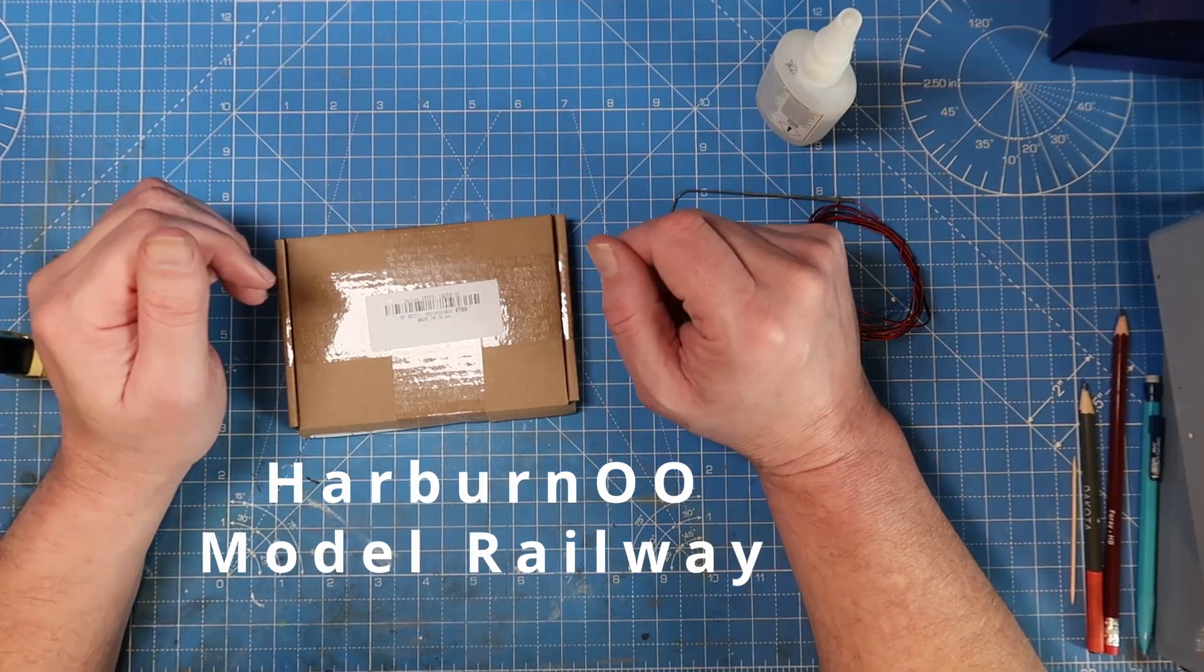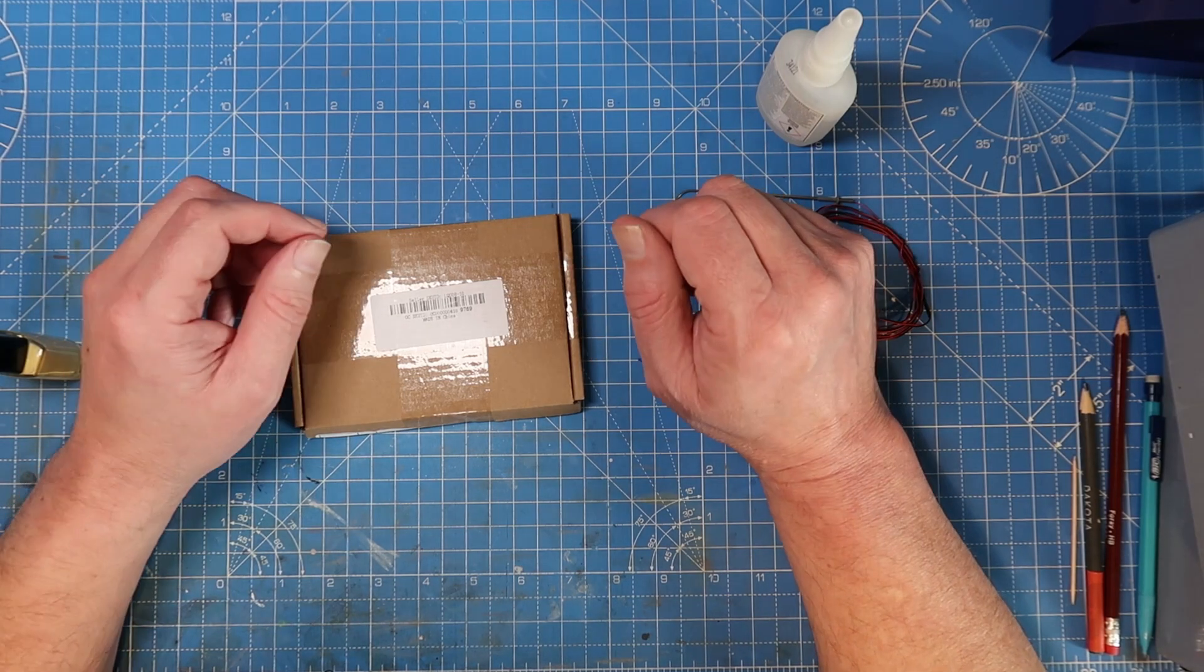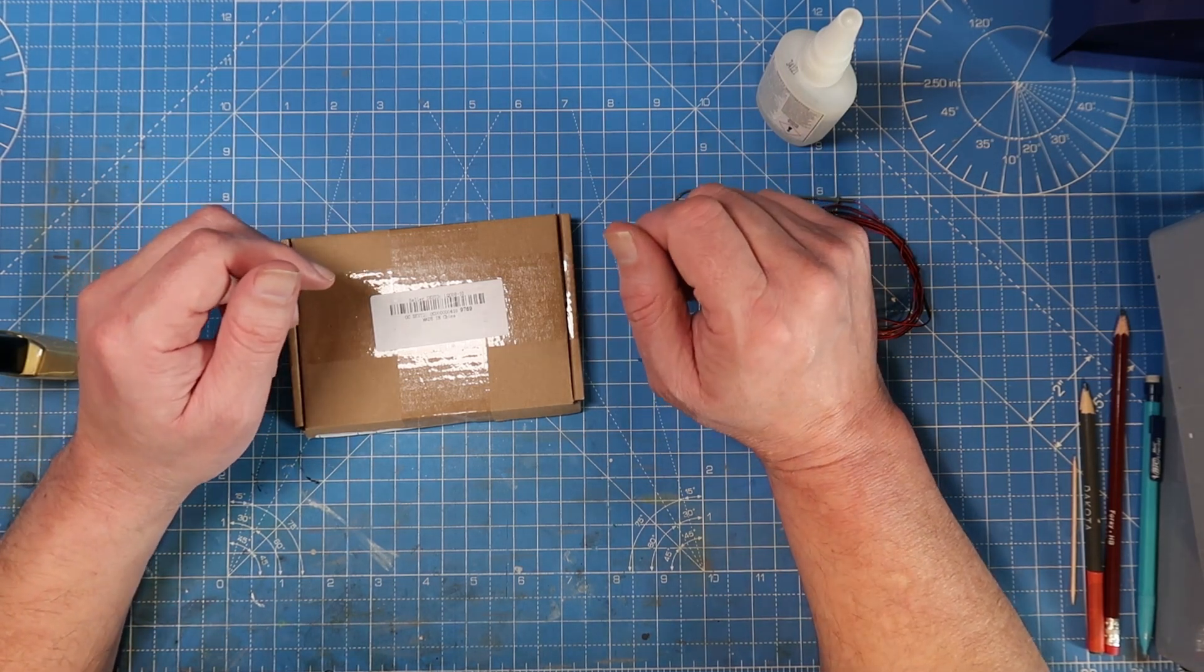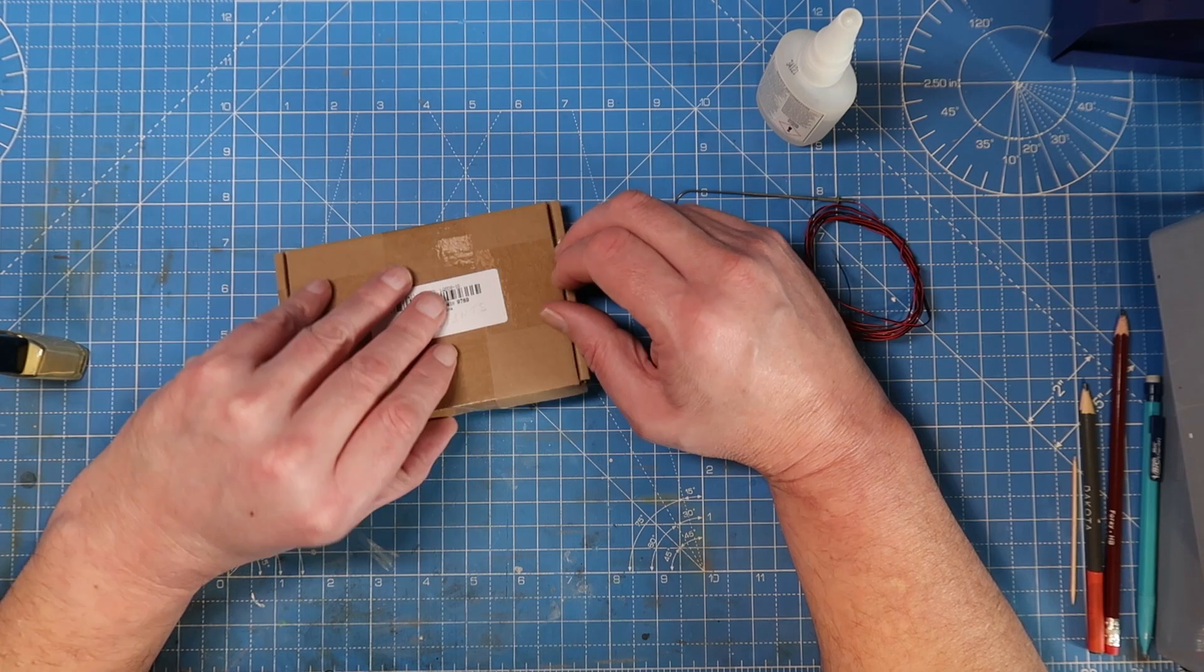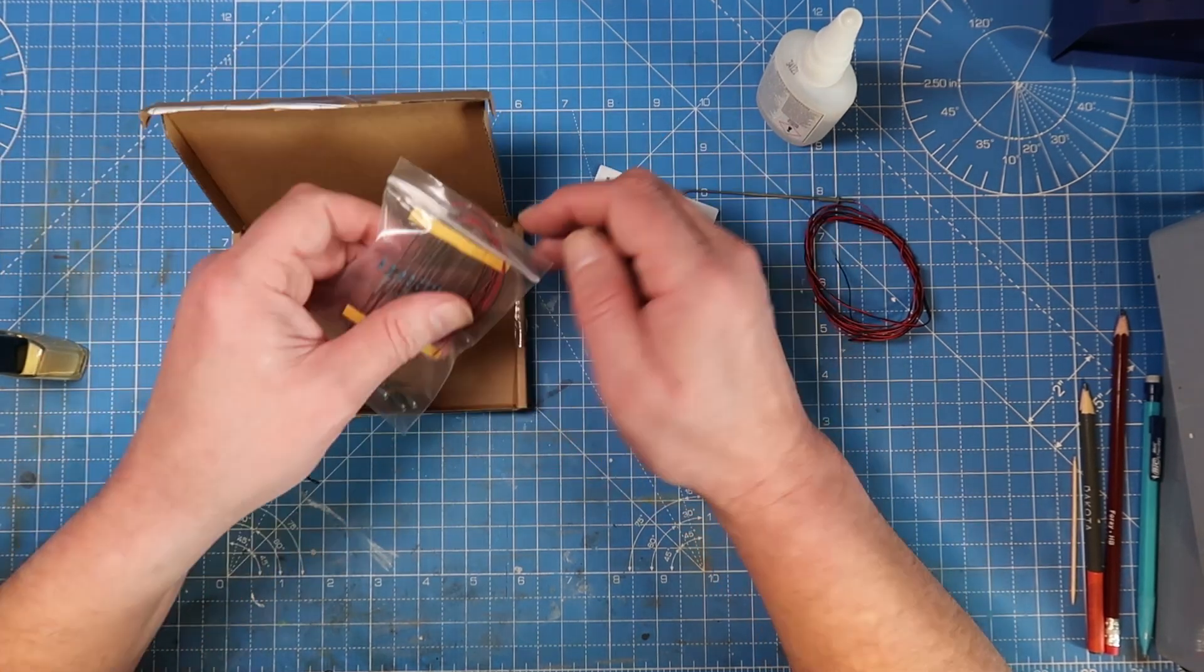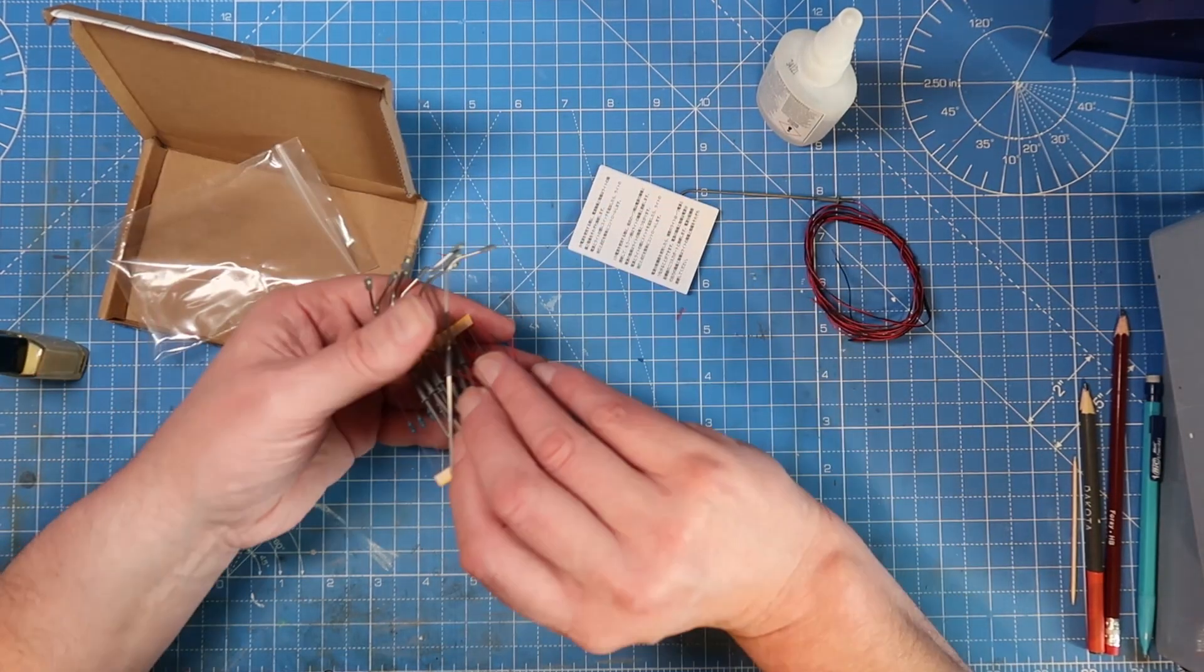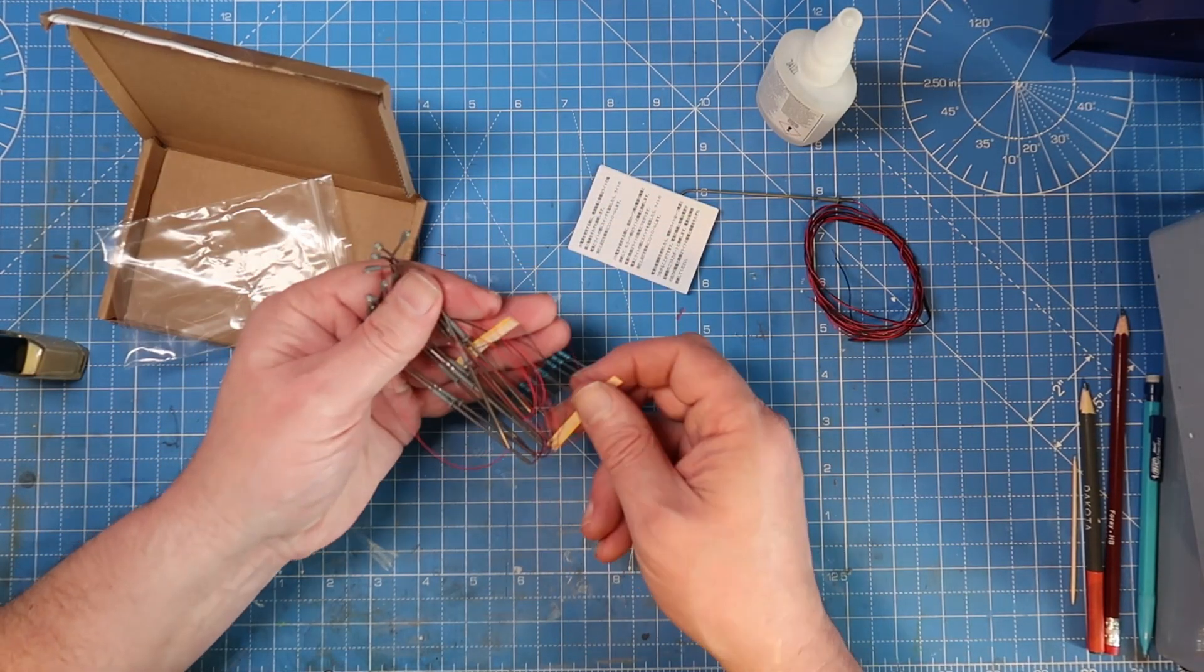Welcome back to Harbourn 00. I've been on eBay and I've got a set of street lights here for the price of £8.99 for 10. In the box you get your lights there, 10 off.